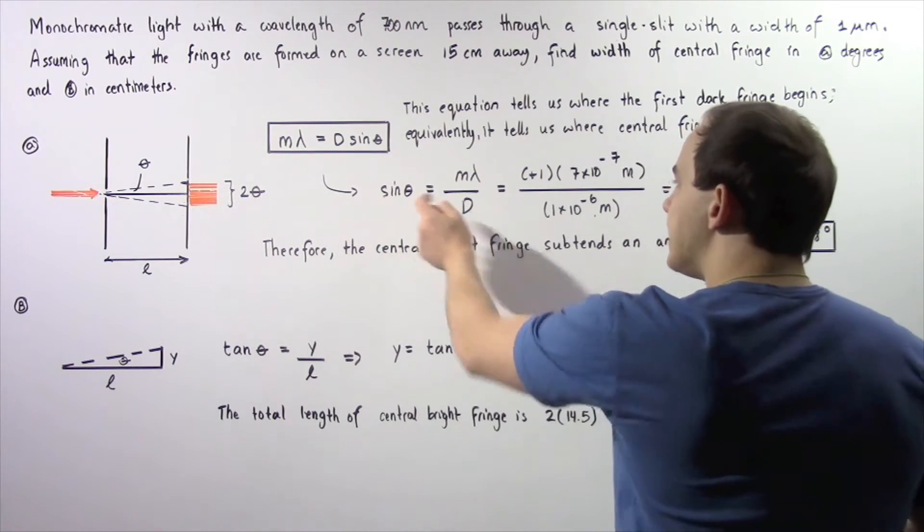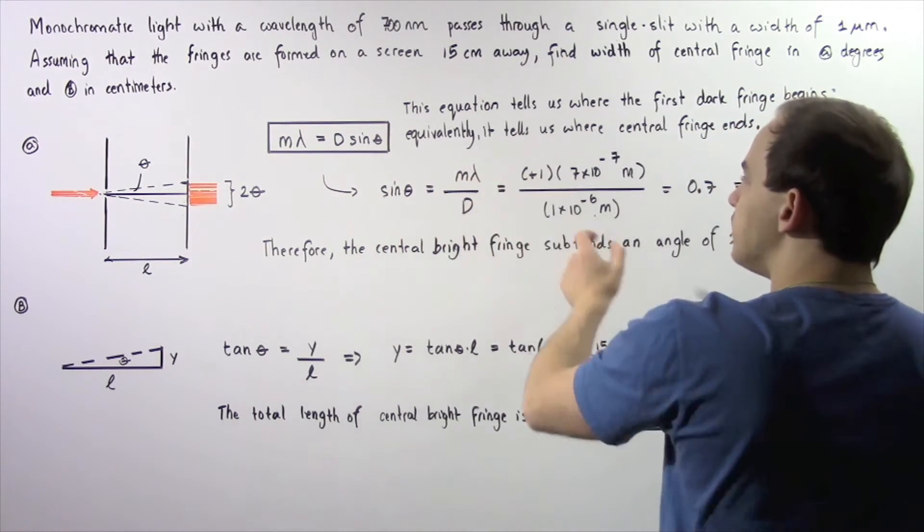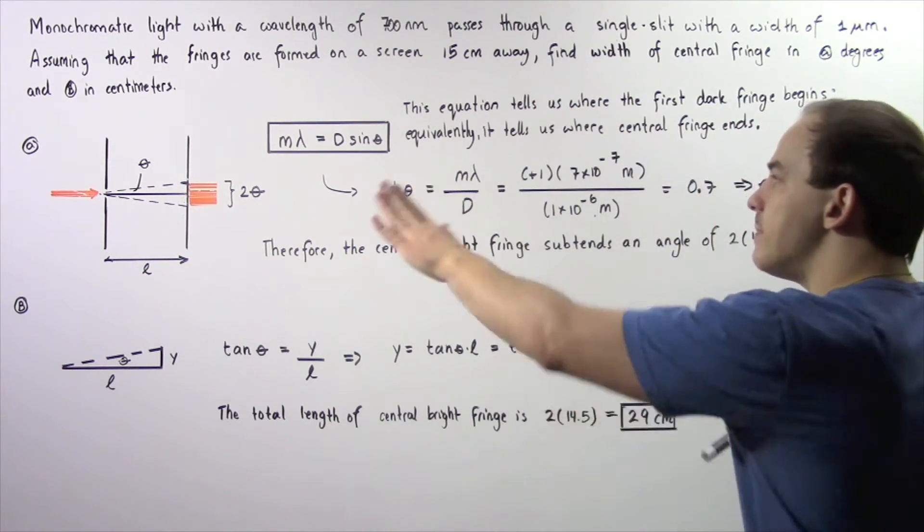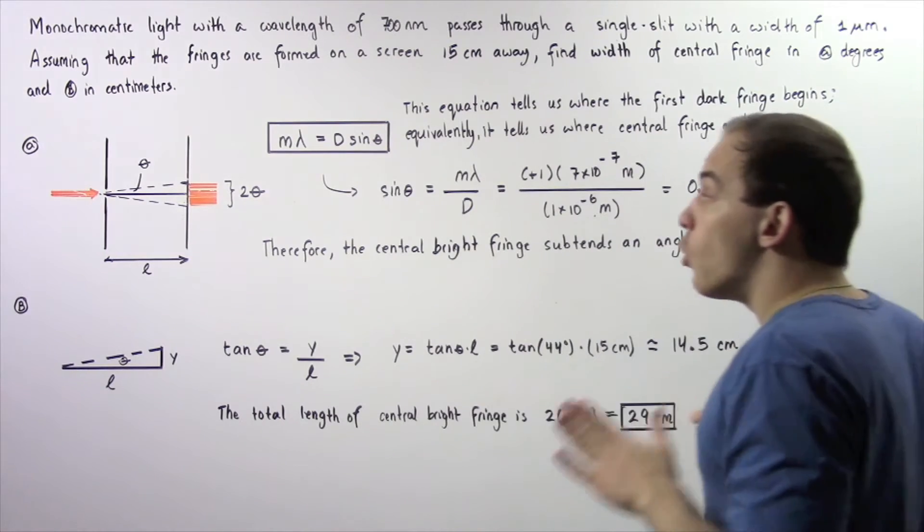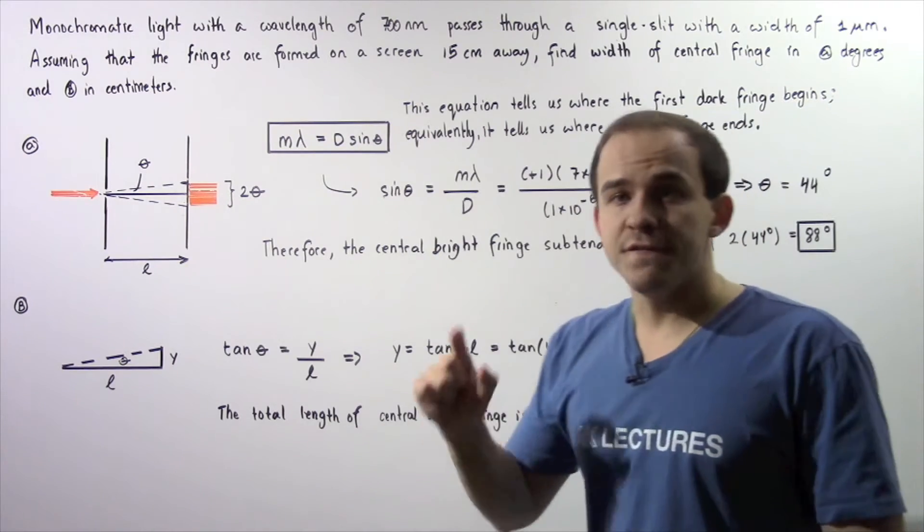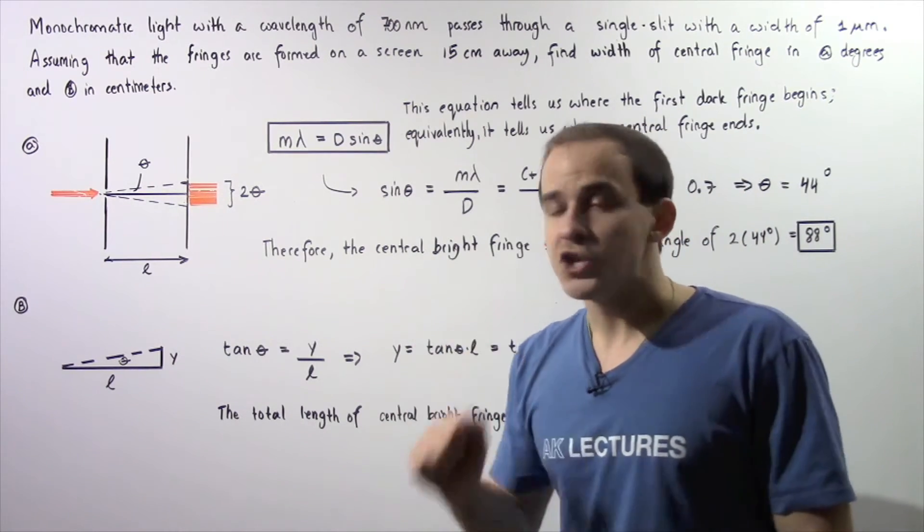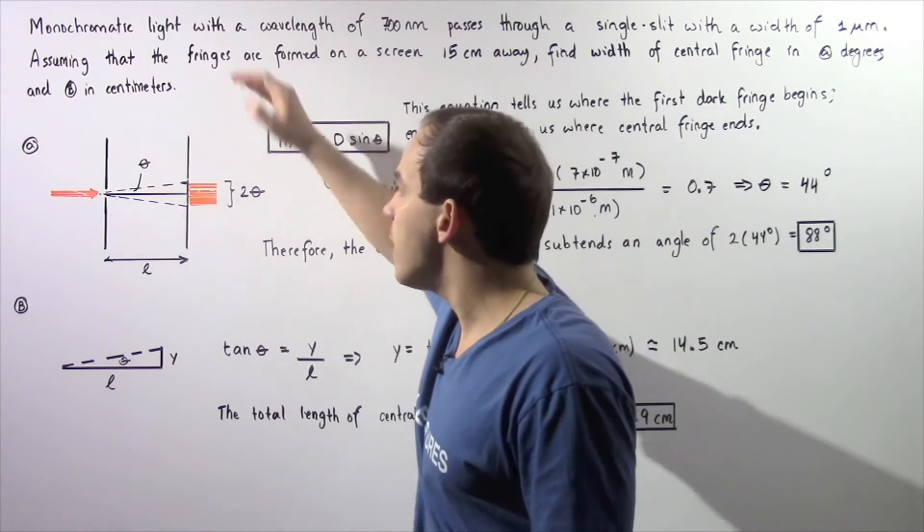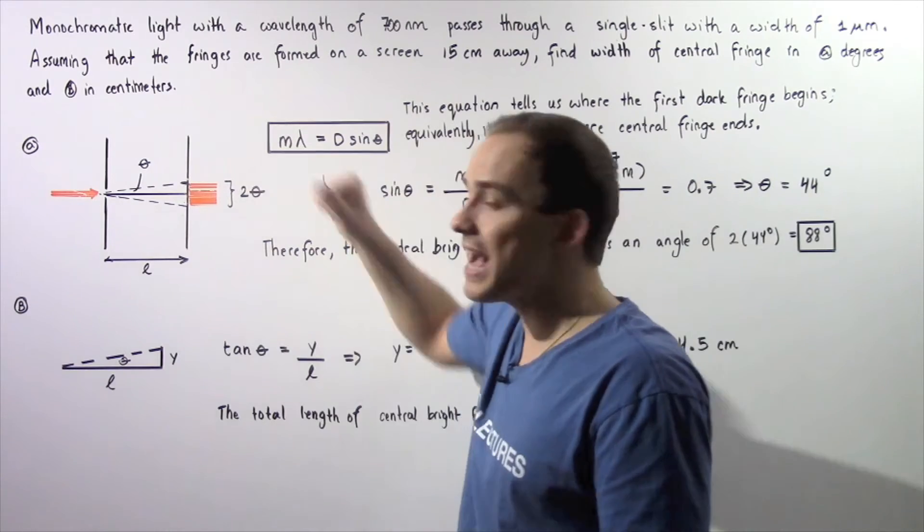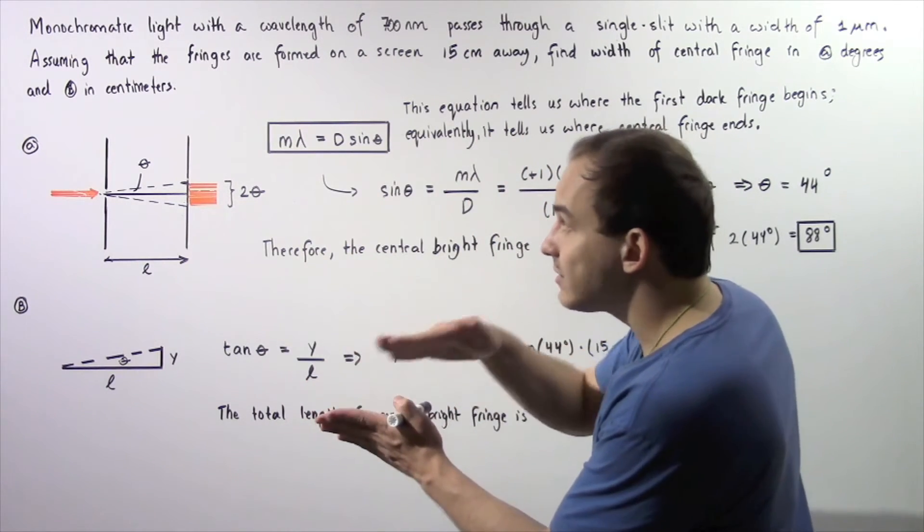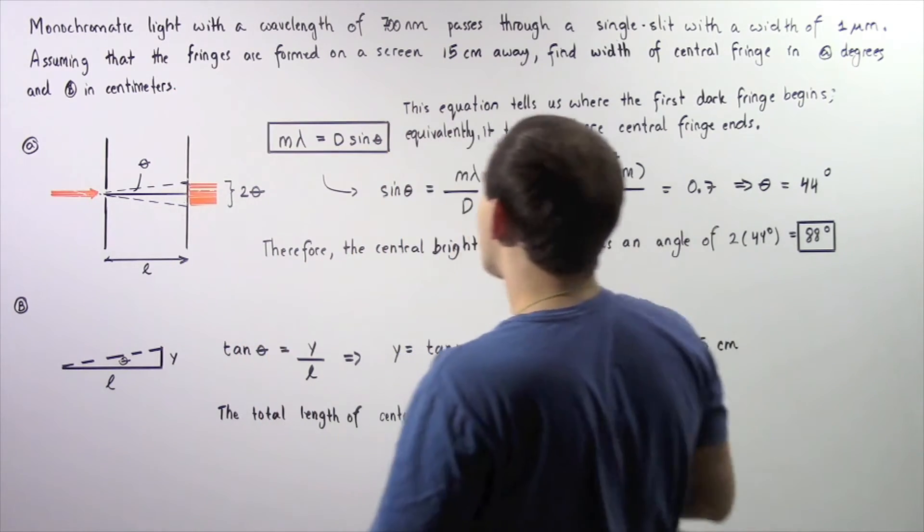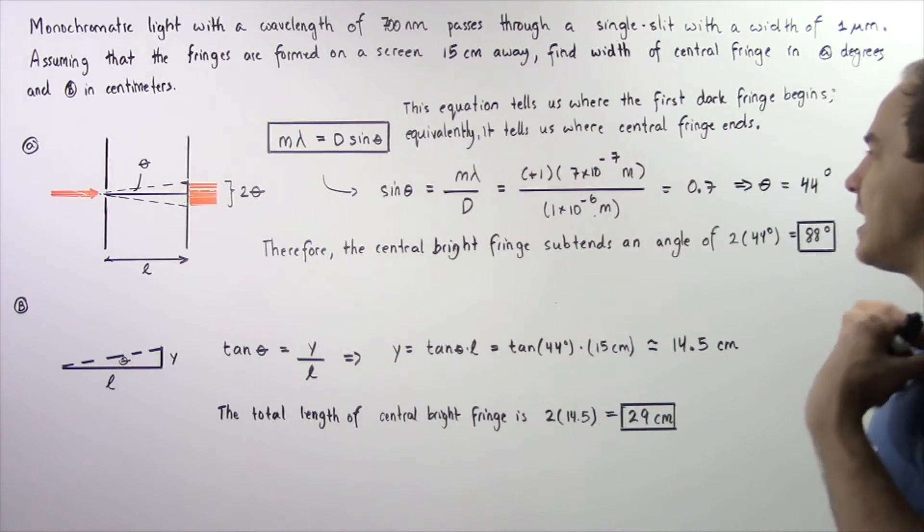Sine of the angle theta is equal to m multiplied by lambda divided by d. Now what exactly is the m in this particular case? Well the m is positive one and that's because positive one refers to the first dark fringe that is formed above our central bright fringe. And that's exactly what we want to calculate.